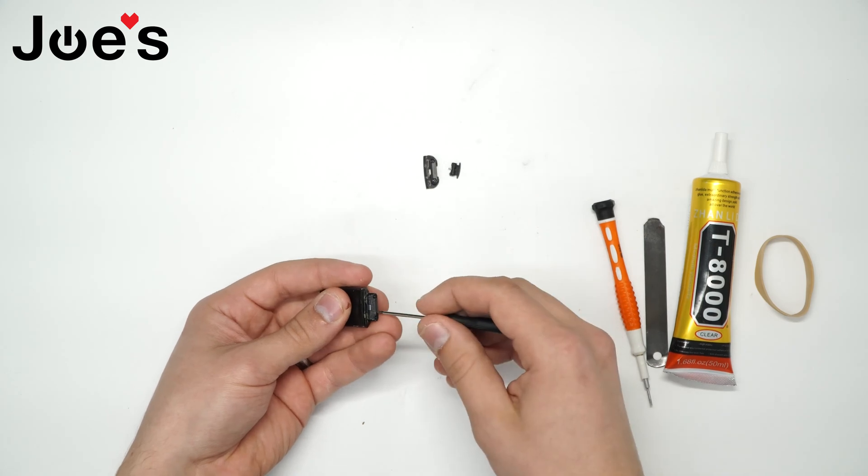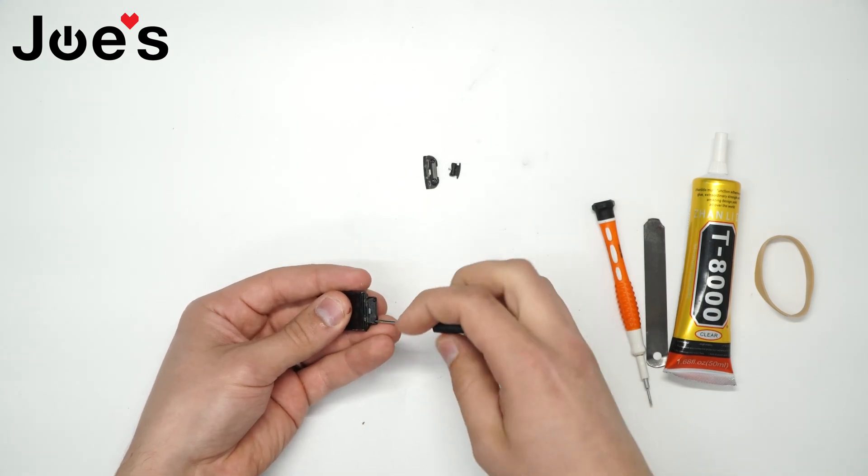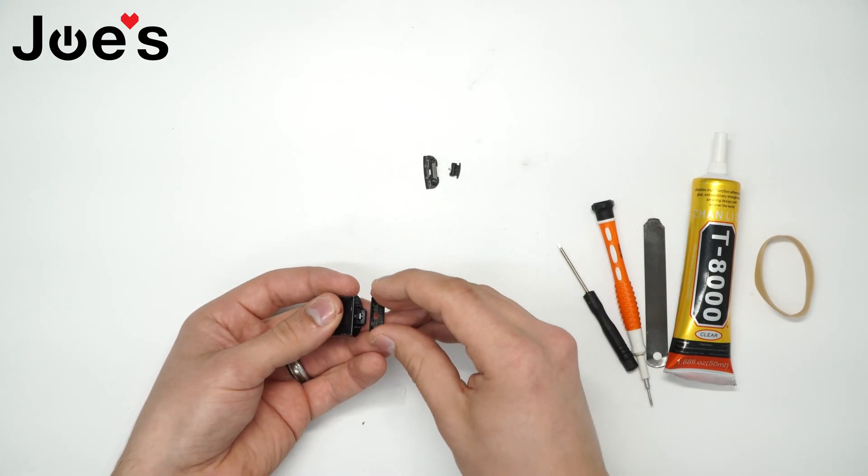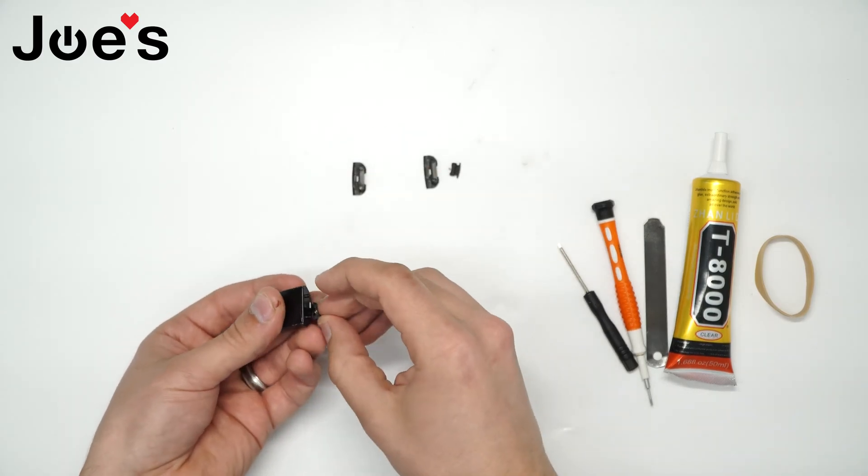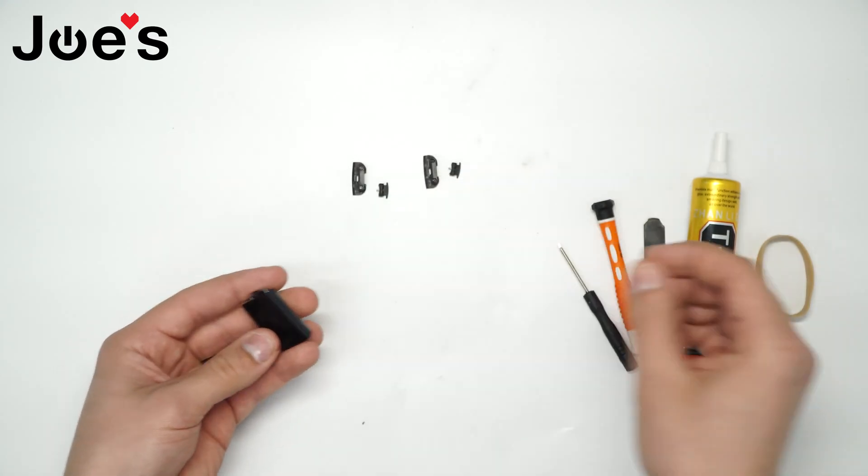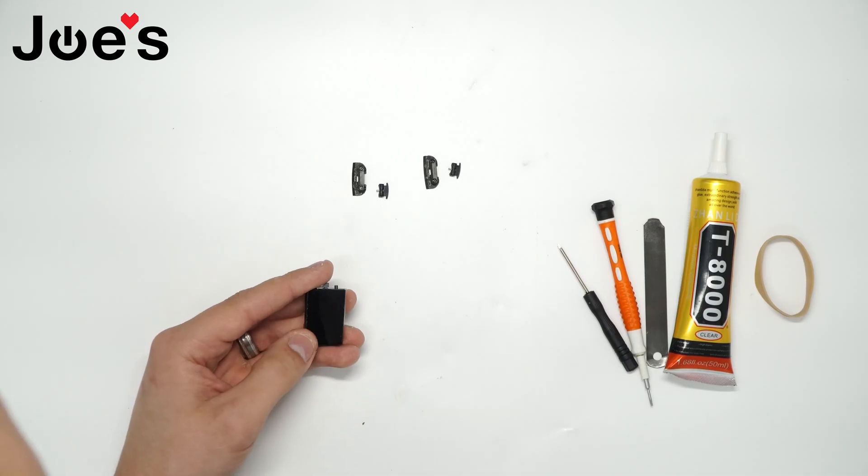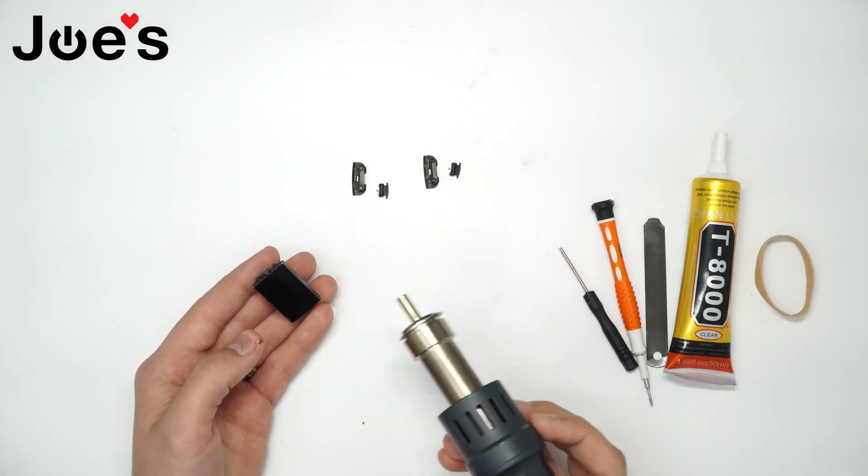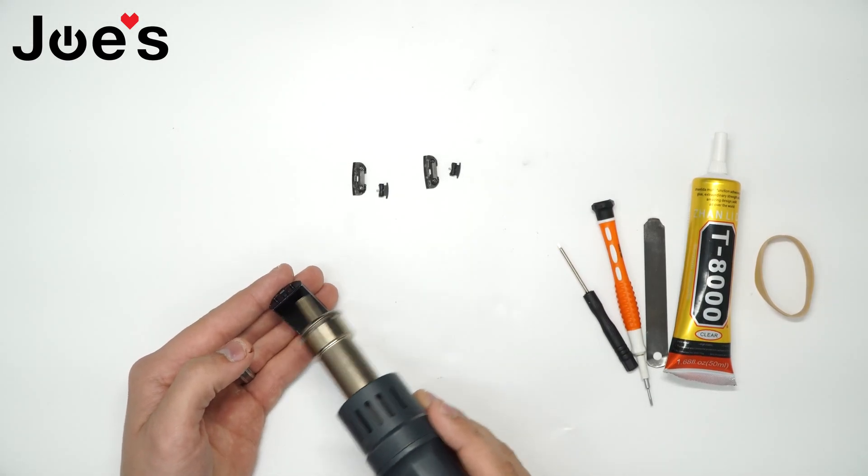Get your heat gun and set it to about 150 degrees Celsius.